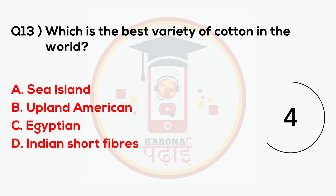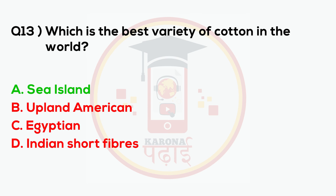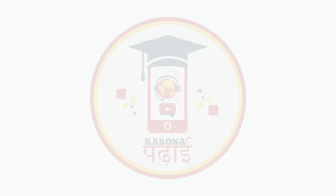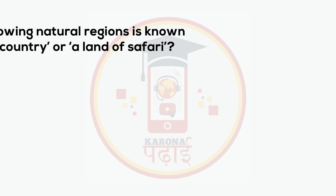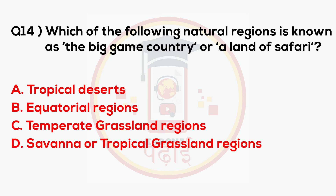Answer: Sea island. Which of the following natural regions is known as the big game country or the land of safari?